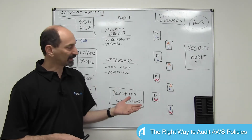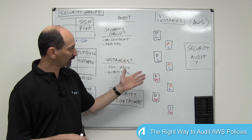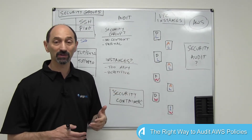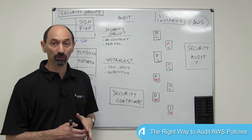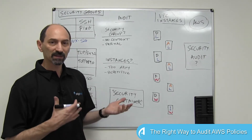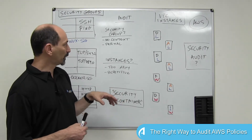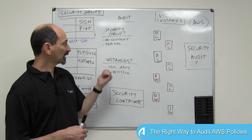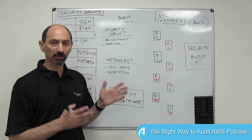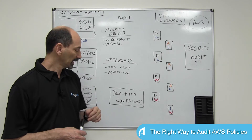And it's extremely repetitive because, as you can see, lots of these instances have exactly the same combination of security groups associated with them. So what's the right balance? How do you do this in a way that's both accurate but reasonably contained in terms of scale?